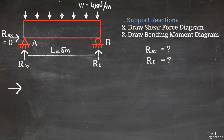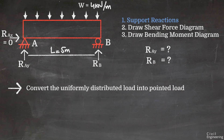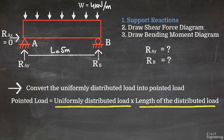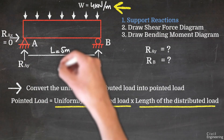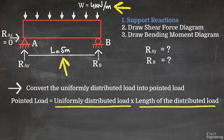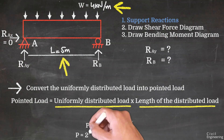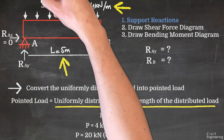First, we convert the uniformly distributed load into a point load. The point load P equals the uniformly distributed load W multiplied by the length L. The UDL is 4 kN/m and the length is 5 m, so P = 4 × 5 = 20 kN. This resultant load acts at the center of the beam.